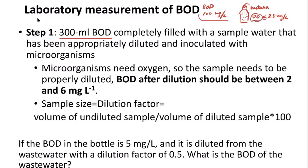Under this situation, if the wastewater has a very large BOD, the dissolved oxygen concentration is just going to decrease and hit zero — there's no way we can measure the change of dissolved oxygen. So what we should do is dilute the sample to a manageable concentration so that we can see the dissolved oxygen decrease gradually. In this way, we can measure the change of the dissolved oxygen and calculate the BOD. That's why we have to do this dilution process.